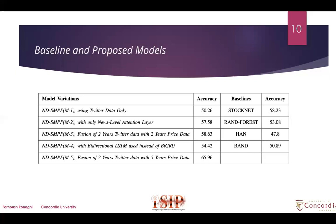In the fourth experiment, we used a bidirectional LSTM instead of a bidirectional GRU and fed our fused two-year Twitter data and two-year price data to the bidirectional LSTM model, obtaining 54.42% accuracy. Finally, we extended the price data to five years and fused two-year Twitter data with five-year price data, achieving the highest accuracy of 65.96%.